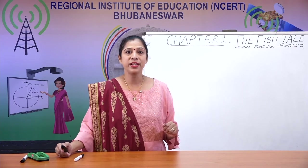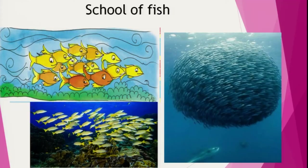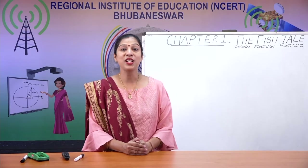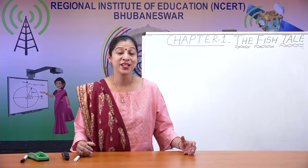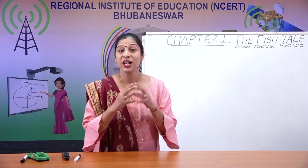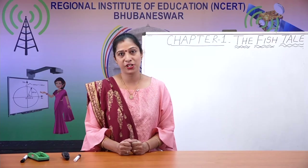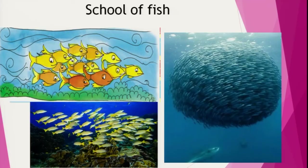Now, are fish a school? When a group of fish come together, they are called a school of fish. You must have heard this in English when learning about collective nouns. A school of fish — they come together to make one group.